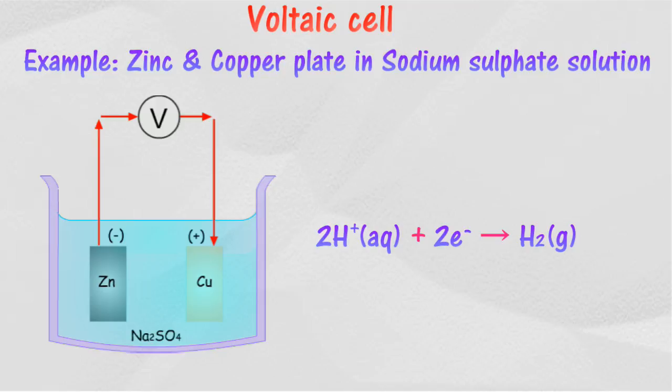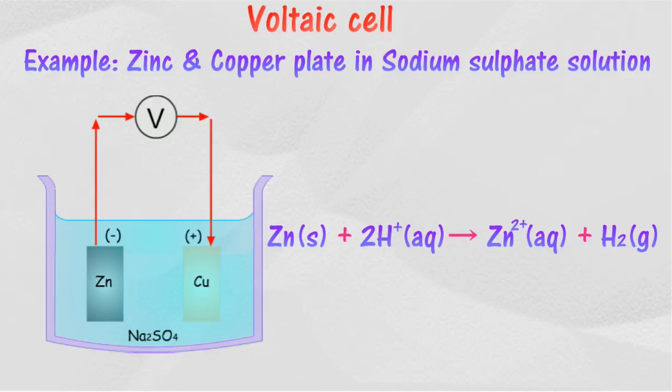Colorless hydrogen gas will be produced. This is the overall ionic equation for the reaction that occurred.